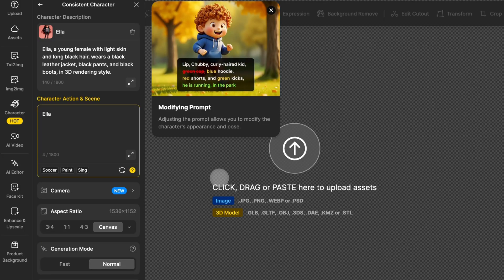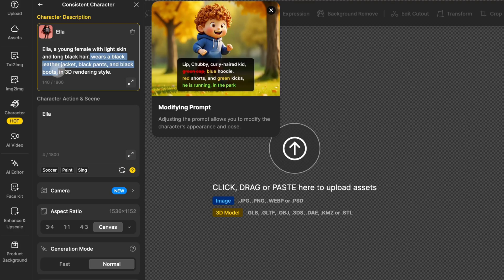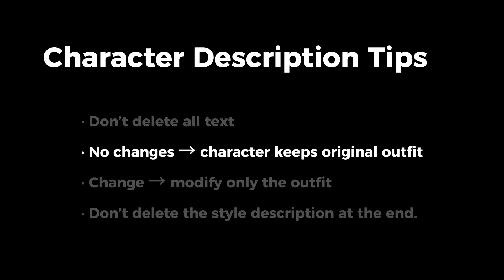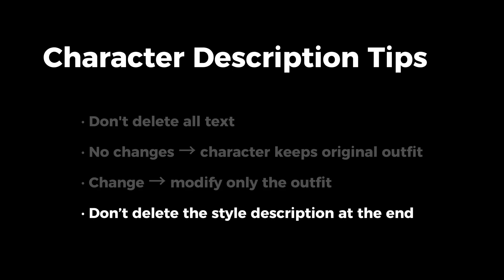Next, let's use text descriptions to generate the image you want. In the character description text box, you'll see a description automatically generated by design based on your character. You can either keep it as is or modify specific parts, but don't delete the entire text. If you don't change anything, the character will keep its original outfit when you generate the image. However, if you want to change the character's outfit, just highlight the part you want to change and type in the new details. And remember, don't delete the style description at the end.